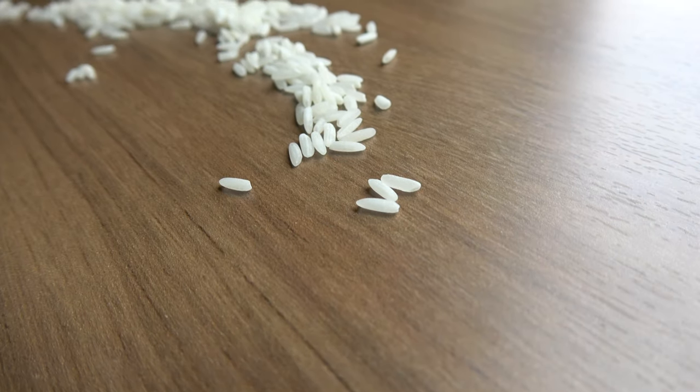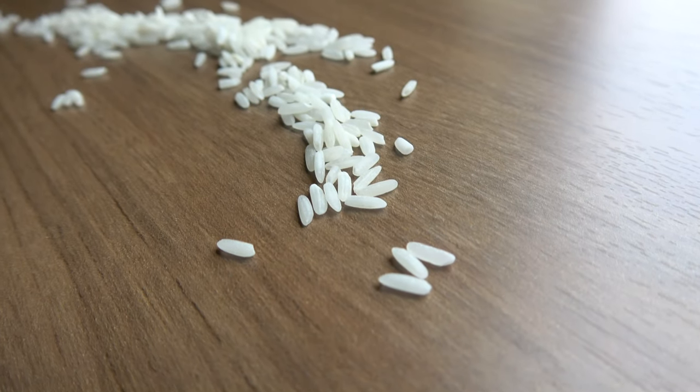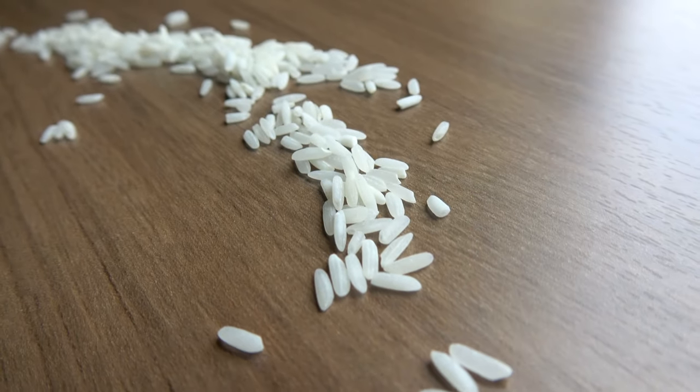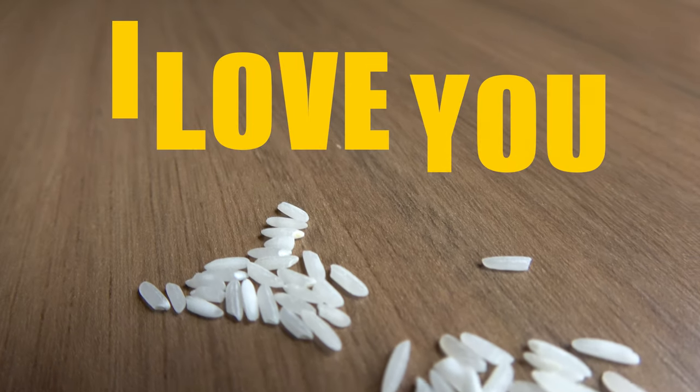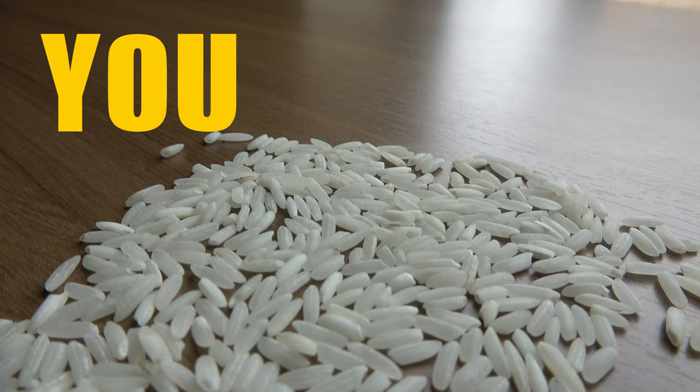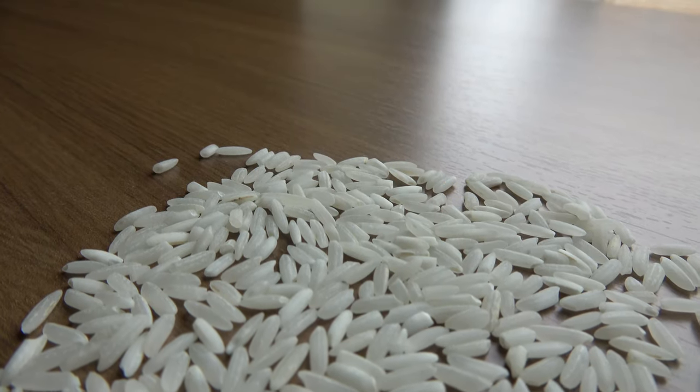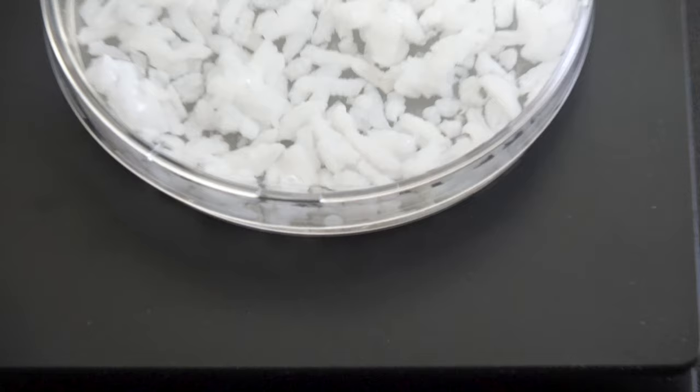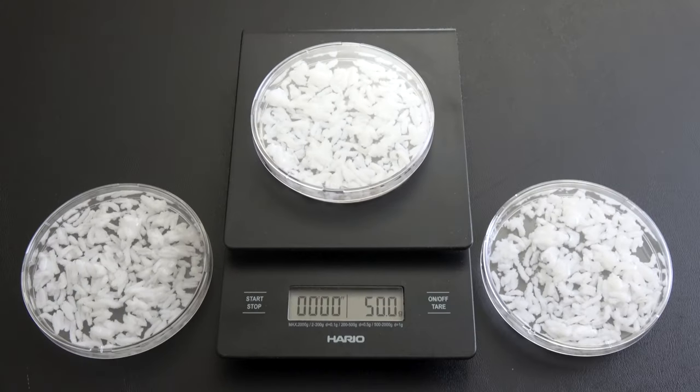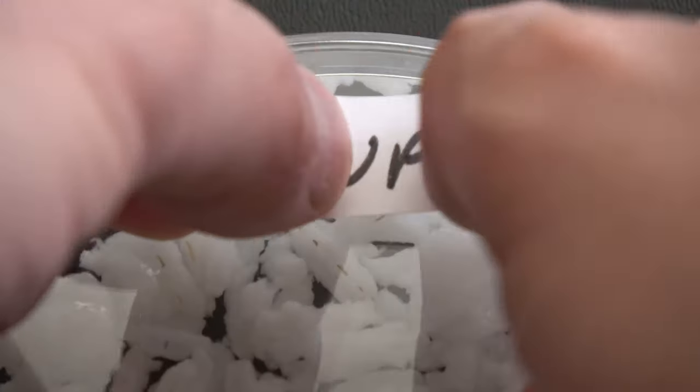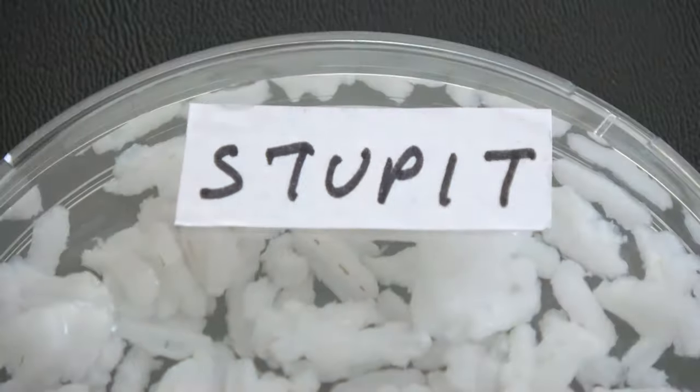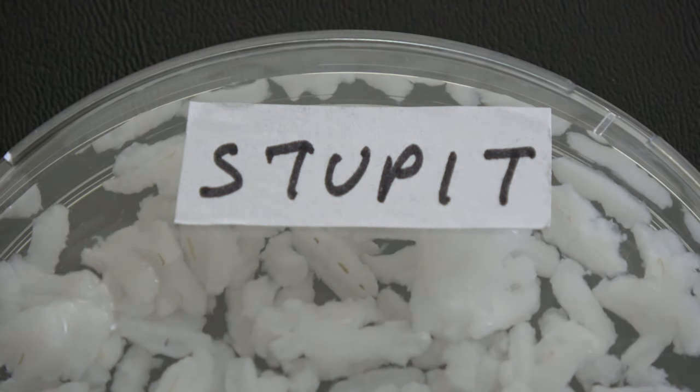The experiment is simple. I'm going to prepare three rice samples. And for 30 days every day, I'm going to say I love you to the first sample, you are stupid to the second sample, and ignore the third one completely. For this experiment, I put the same amount of distilled water and rice into three Petri dishes. On the first one, I wrote love. The second one, stupid. Yes, I spelled stupid wrong. How appropriate.